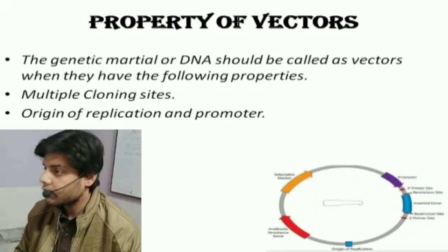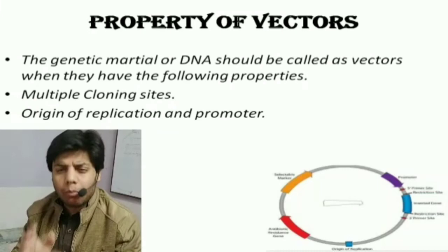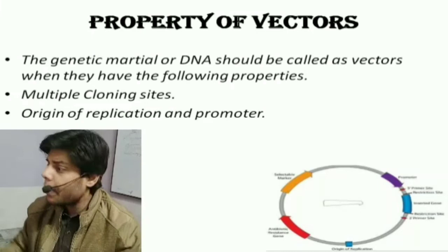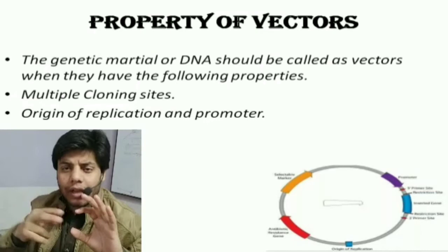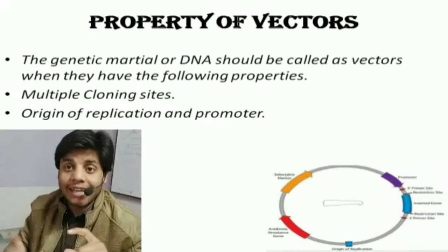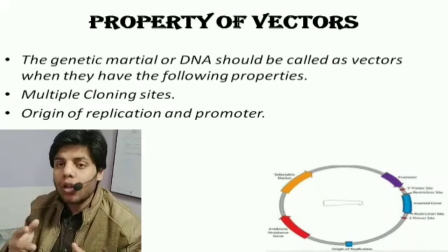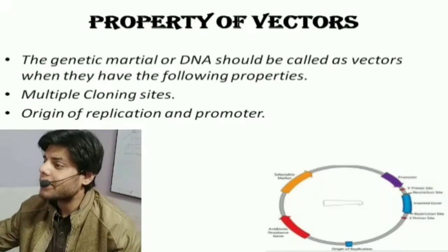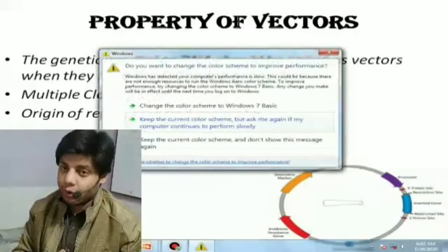A DNA molecule can be called a vector when it has the following properties: multiple cloning sites — multiple means many copies, cloning means to produce copies, and site means a specific area — where you can insert different genes of interest into one specific region of the vector.